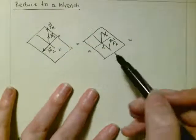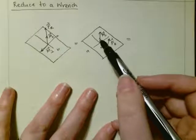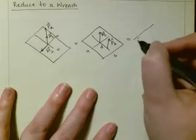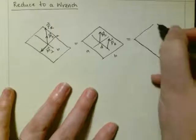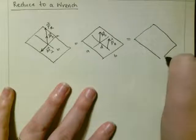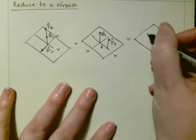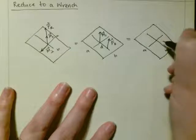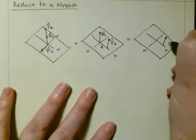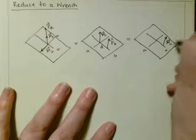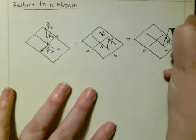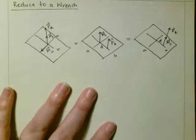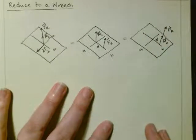And now, the parallel moment right here is a free vector. So we can just move it, such that we've got the parallel moment and the resultant force acting at a distance D, and that is a reduction to a wrench.